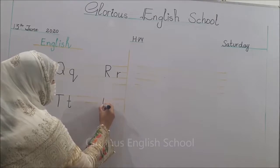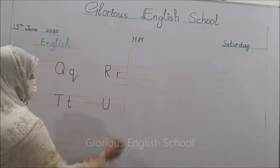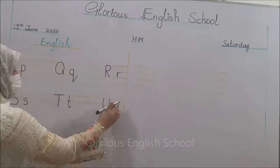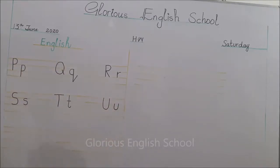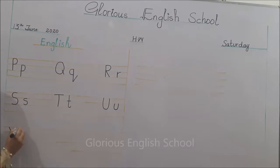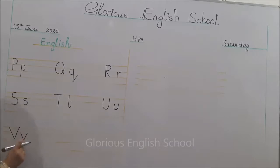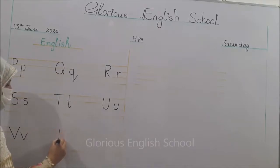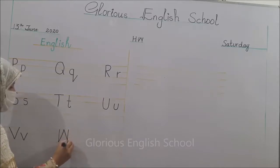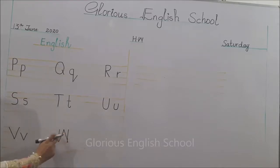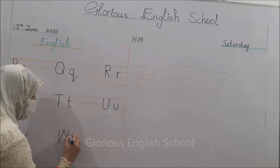T के बाद U - make a curve। Small u भी ऐसे बनाना है लेकिन mid की two lines में बनाना है। V के लिए one and two slanting lines से V बनाना है। Small v भी one and two slanting lines में बनाना है। W के लिए two slanting lines make a W। Small w भी ऐसे ही।